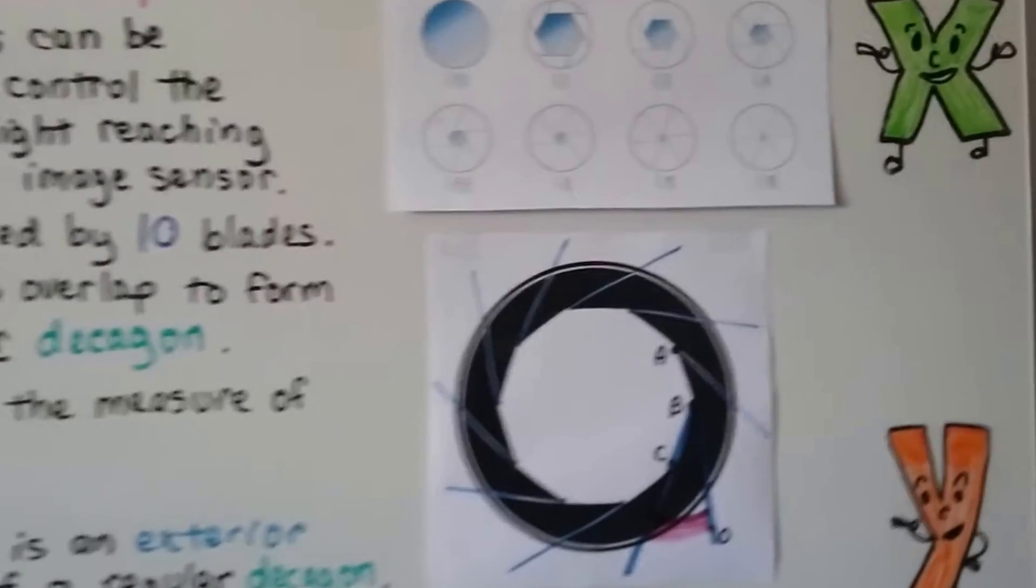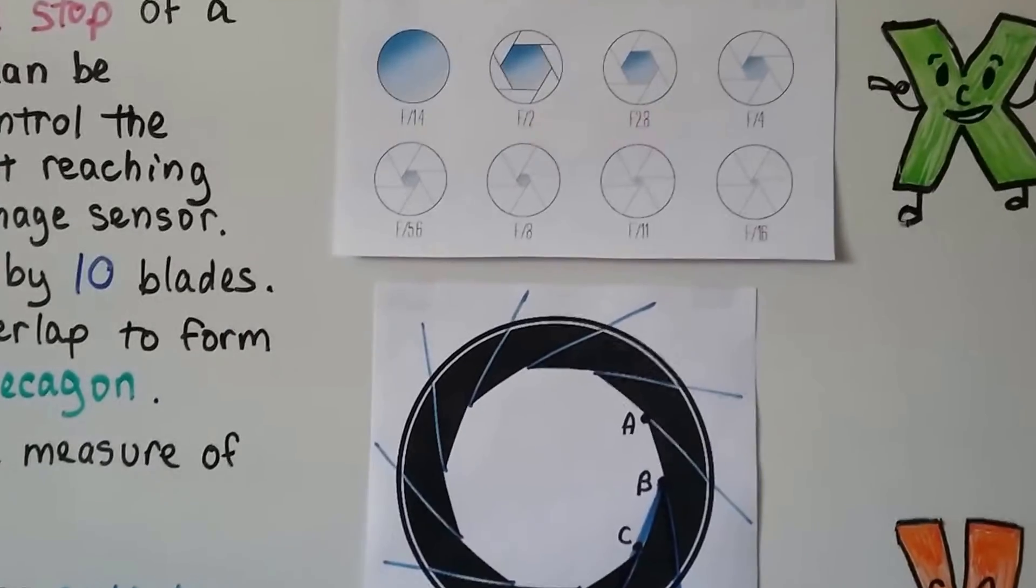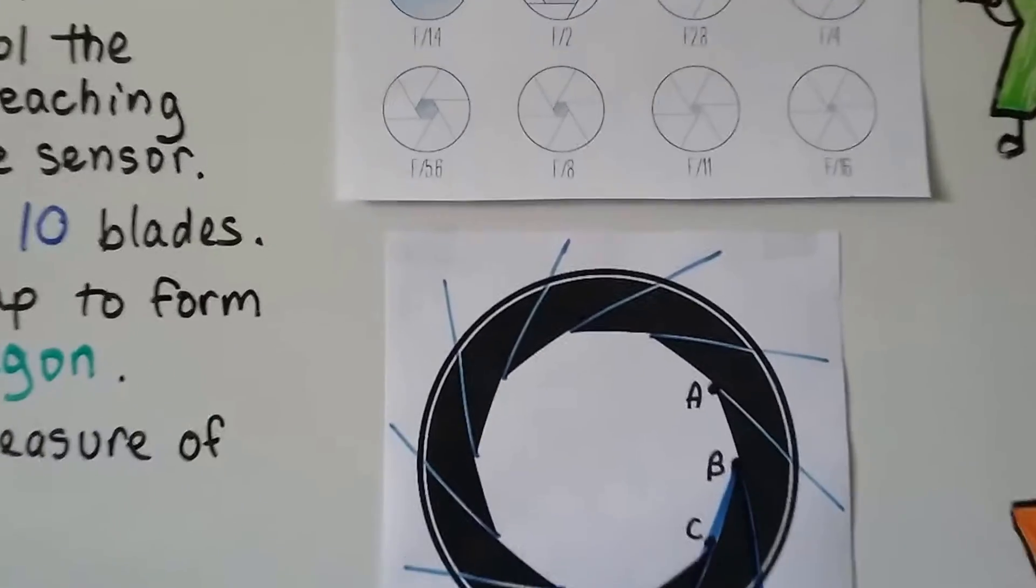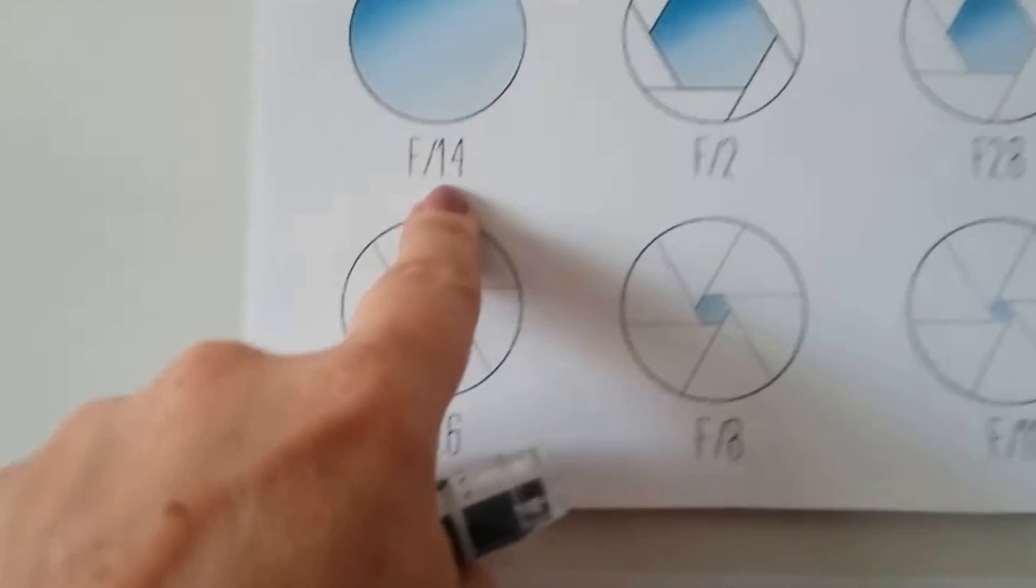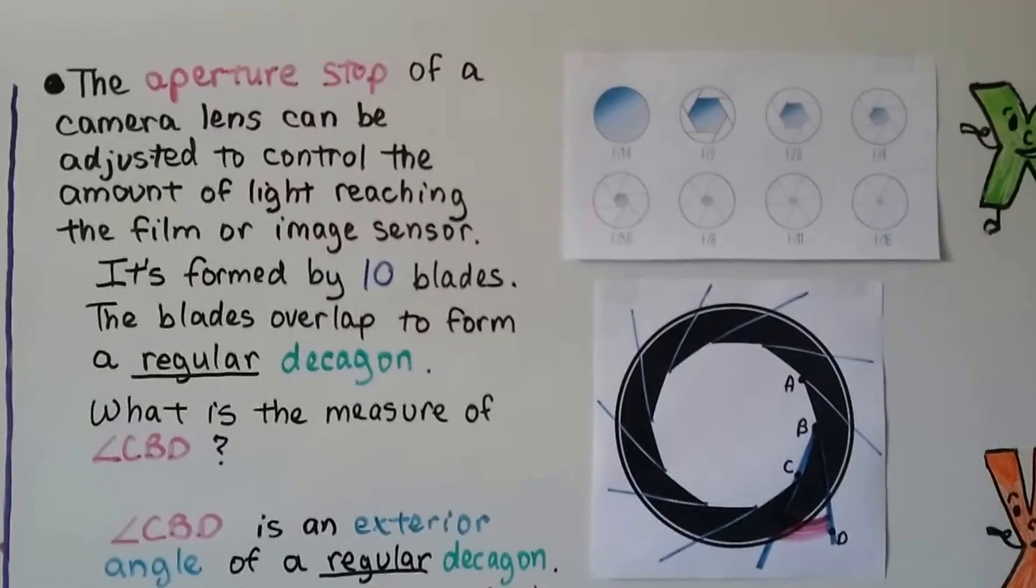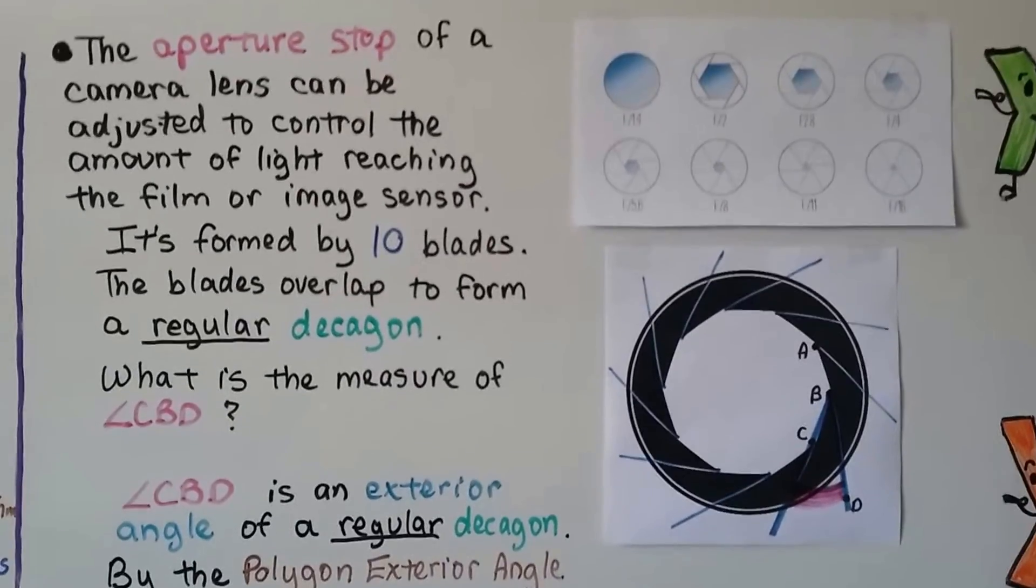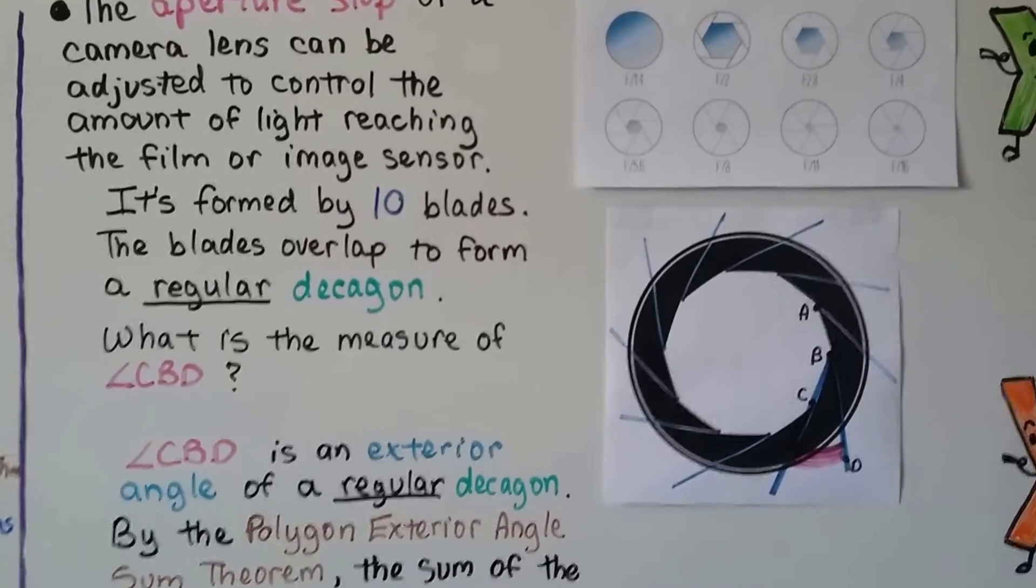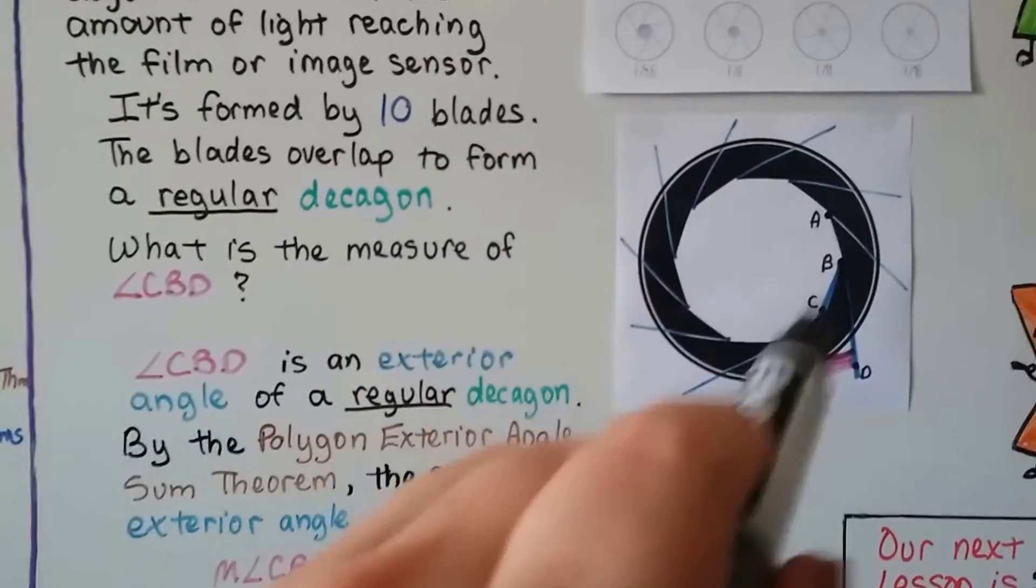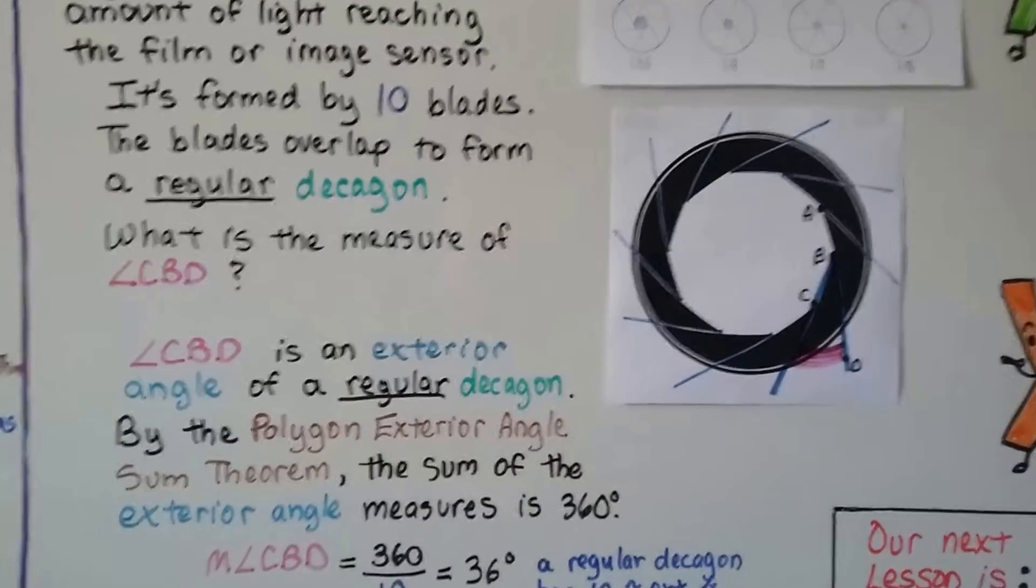Now take a look at these. This is just a giant version of this. This is the opening of a camera lens. And you can see it says f14, f2. In fact, that might be f1.4. Yeah, that's 1.4. So the aperture stop of a camera lens can be adjusted to control the amount of light reaching the film or image sensor. It's the aperture stop, you might hear it called the f-stop. It's formed by 10 blades, and the blades overlap to form a regular decagon. So this white shape on the inside is a decagon, because it's making all these little sides. See? 10 of them.